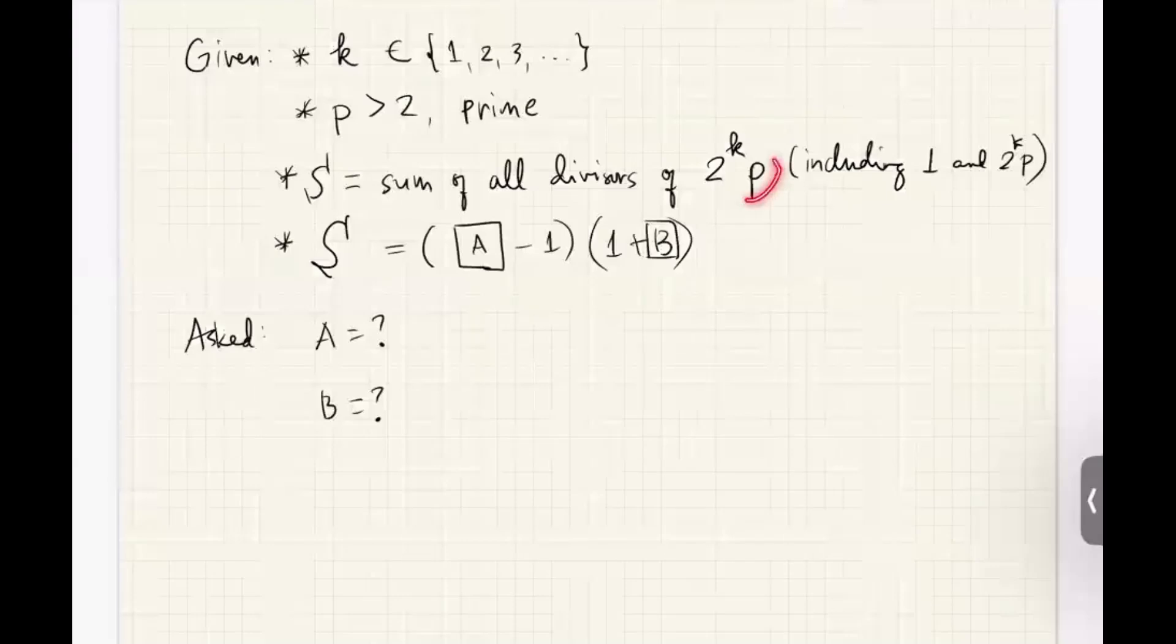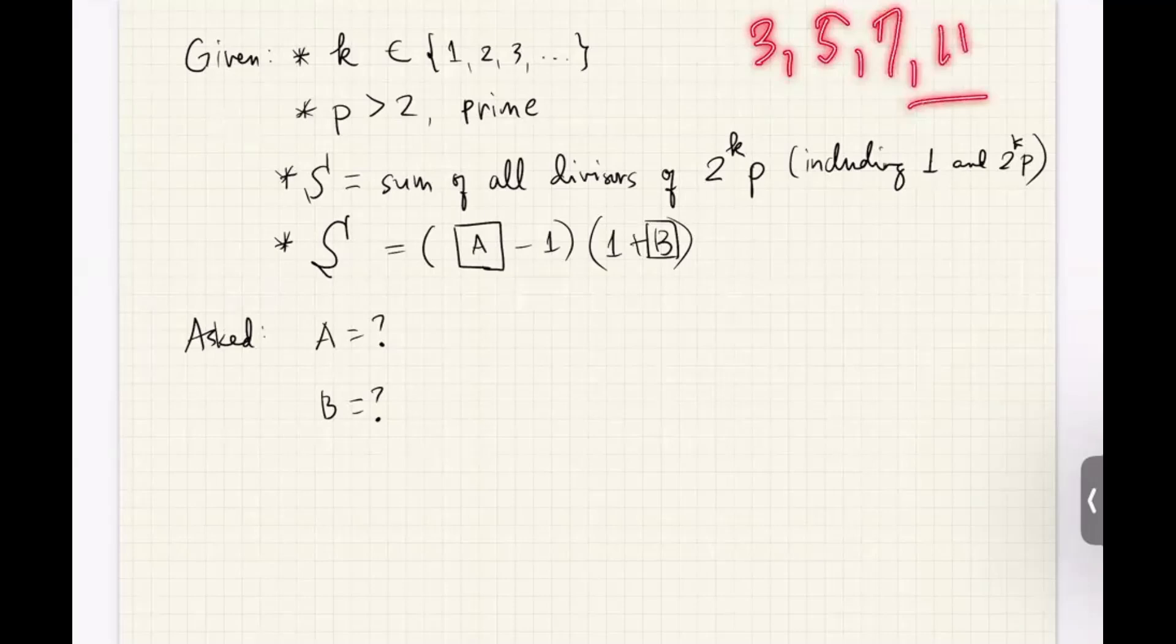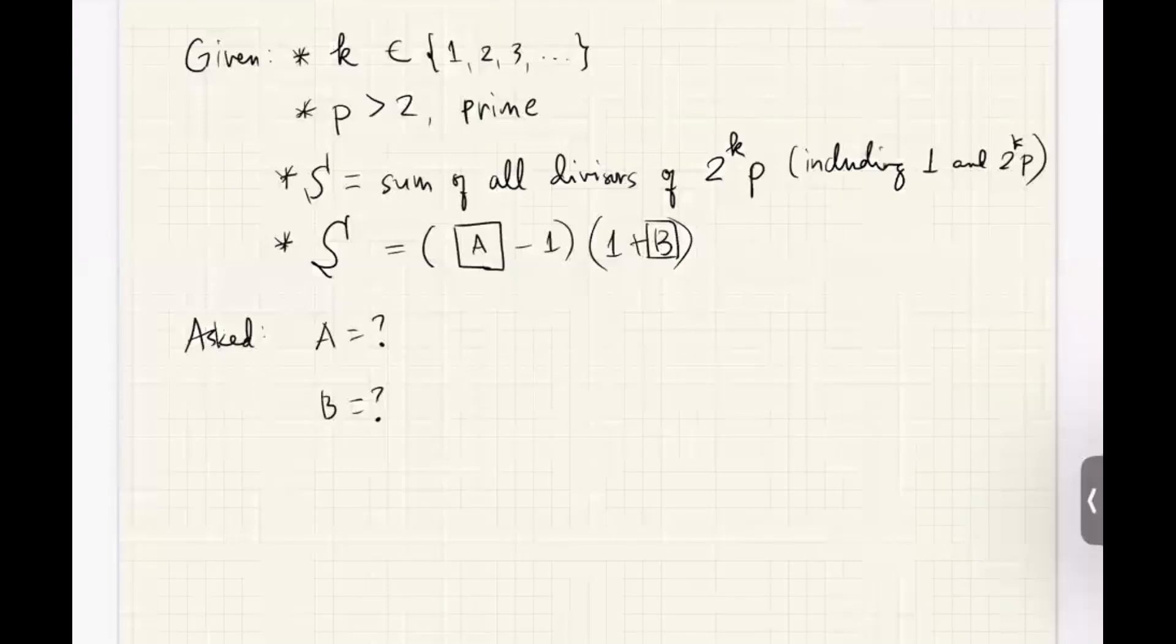And what about p? p is, again, a natural number, but it is a prime number. And this prime number must be greater than 2. Remember that 2 is also a prime number, but for p, p has to be greater than 2, and it has to be prime. So it could be 3, 5, 7, 11, and so on. So these are numbers that do not have any other factors, do not have any other divisors other than itself and 1.